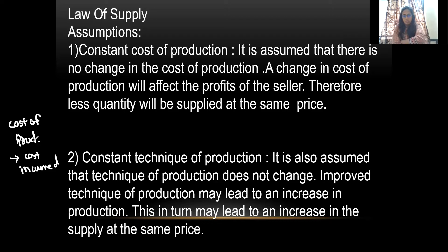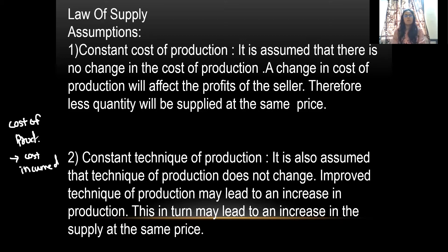The second assumption is constant technique of production. Suppose I am using technique XYZ — I should continue using it in the next production run as well. If you change the technology, it may affect the costing. For example, if I'm using a traditional method and suddenly introduce modern technology, my cost may reduce, and that may affect the supply. So while proving this law, the technique of production should remain constant.